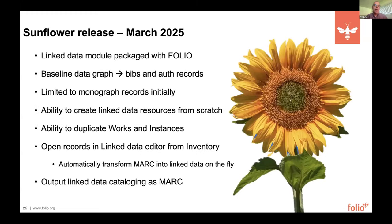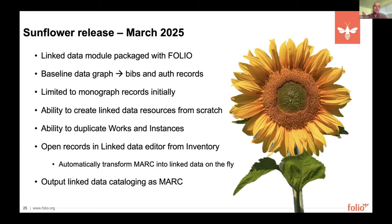Details about the Sunflower release for linked data: our baseline data graph will include BIBs and authority records. We're limiting it initially to monograph cataloging workflows, but you'll have the ability to create linked data resources from scratch, duplicate works and instances already in the data graph, open records in the linked data editor from FOLIO inventory, and output linked data as MARC for downstream services. All that and more will be available with the Sunflower release next spring.